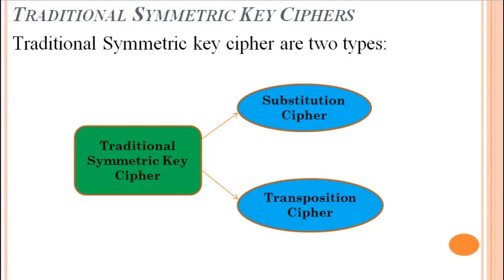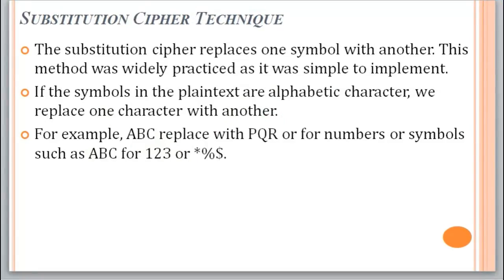So that if anyone — an attacker or a hacker — wants to access or monitor our communication media, they will never understand what the actual message sent by the sender to the receiver is. First one: substitution technique cipher. In substitution technique cipher, one letter or one symbol is replaced by another. This method was widely practiced as it was simple to implement.